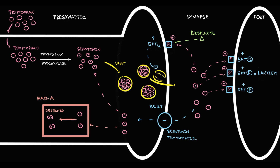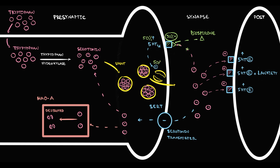When a patient takes buspirone, buspirone binds to the serotonin 1A receptor on the presynaptic neuron, preventing serotonin from binding to it. With binding, buspirone activates the 1A receptor, but unlike serotonin, buspirone is only a partial agonist. If serotonin binds to this receptor, it becomes fully activated at 100 percent, but if buspirone binds, the receptor becomes activated only at 50 percent. With the receptor only half activated, the reciprocal inhibition becomes only half effective, and with decreased reciprocal inhibition, exocytosis of serotonin into the synapse increases.